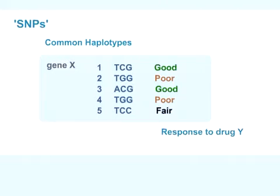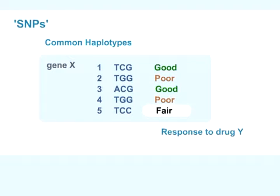For example, if responsiveness to a particular drug Y is affected by a set of SNPs in gene X, and there are five commonly occurring haplotypes — combinations of these SNPs — in a population, then two might be associated with good responses, one with moderately good responses, and two with poor responses.